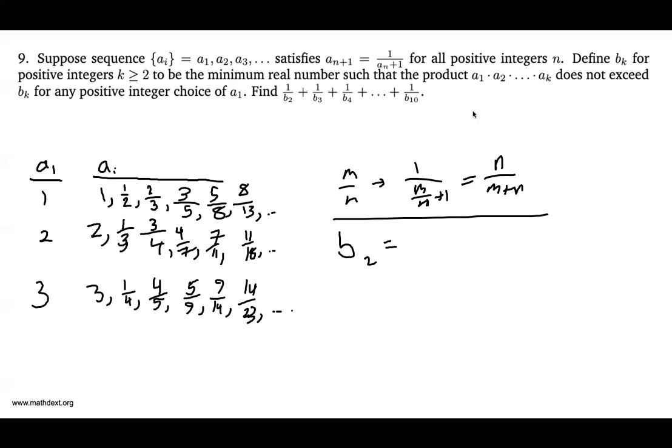So b sub 2 is equal to, well, we look at the product a1 times a2, and in each of these sequences, and you see, the products are 1 times a half, 2 times a third, 3 times a quarter, and for any given a1, you get a1 over a1 plus 1. And b2 has to be the smallest number that's bigger than all of these guys. In this case, you see that the answer is just 1, because a1 can never be bigger than a1 plus 1. But if you make a1 extremely big, this fraction will get extremely close to 1 from the lower side. So b2 is equal to 1.